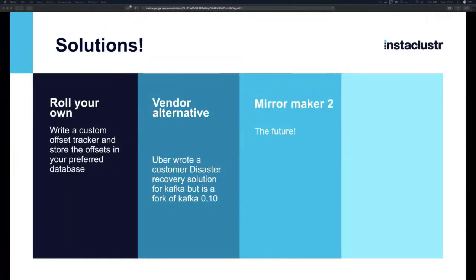To address offset translation, options include rolling your own solution that tracks offsets, using vendor alternatives, or using Mirror Maker 2. Uber's uReplicator is one vendor example. Multiple organizations have encountered this problem and built their own solutions.